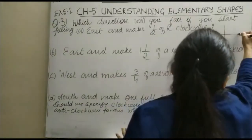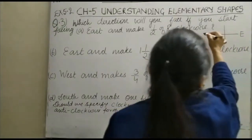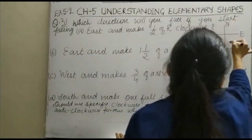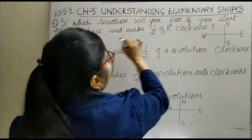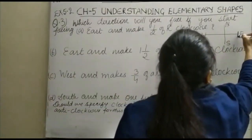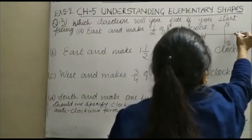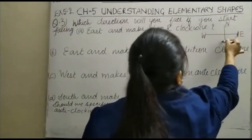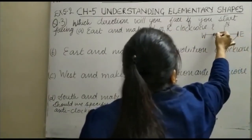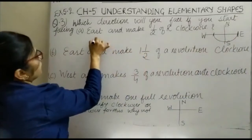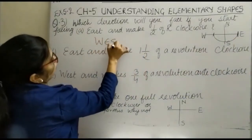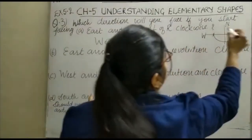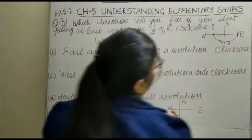This is your east, west, north, and south. You are starting from east. This is the starting point, and you make half a revolution. So after half a revolution in clockwise direction, you arrive at west. So you will write here: the direction will be west, and it is clockwise.